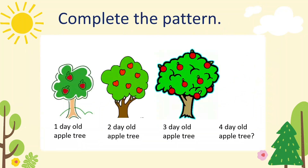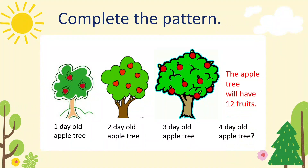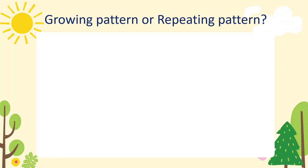Let's complete the pattern. Look at the one-day-old apple tree — there are three apples. The two-day-old apple tree has six apples. The three-day-old apple tree has nine apples. What will a four-day-old apple tree have? Correct — the apple tree will have 12 fruits! What's the pattern? You skip-count by threes: three, six, nine, twelve.